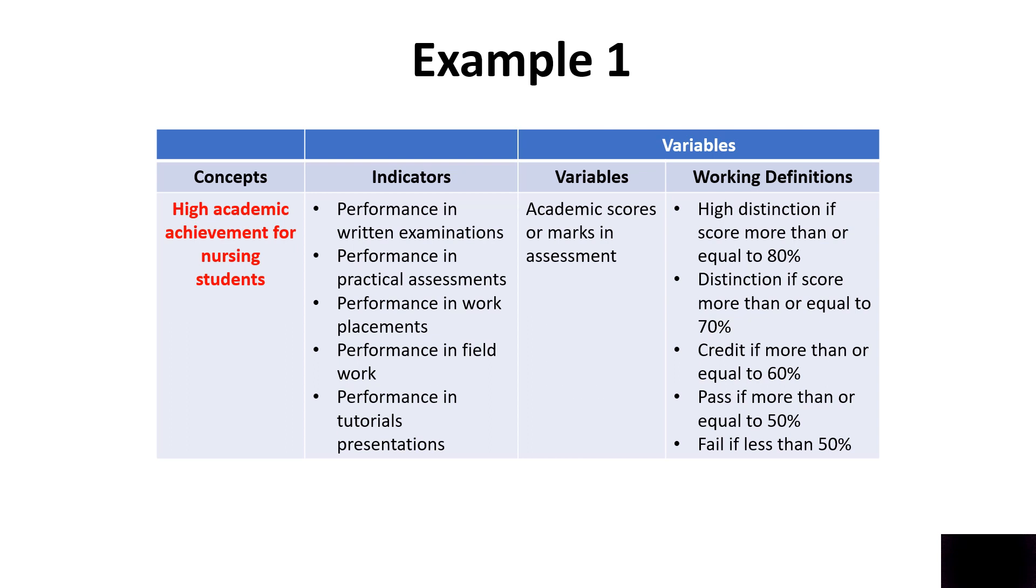In this example, the concept itself is academic achievement. Now, when I say students' academic achievement, for you the meaning of academic achievement may differ from what I want it to be. So, to make it very clear so that we both understand the same meaning of the concept, we have to convert it into a measurable variable. In this example, the concept is high academic achievement for nursing students. This is what I want to investigate.